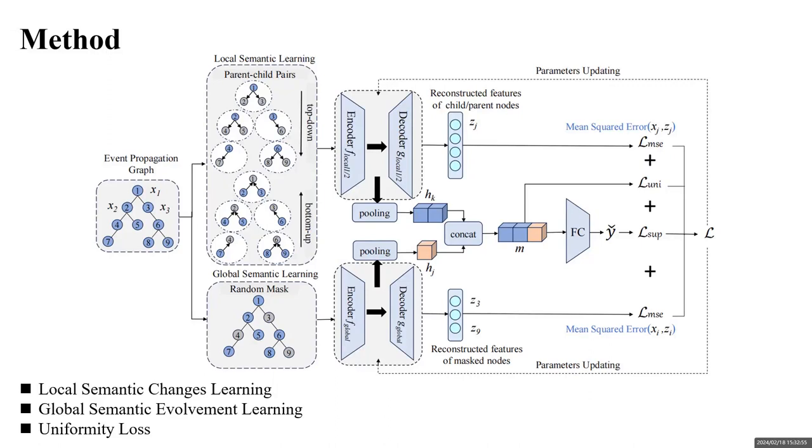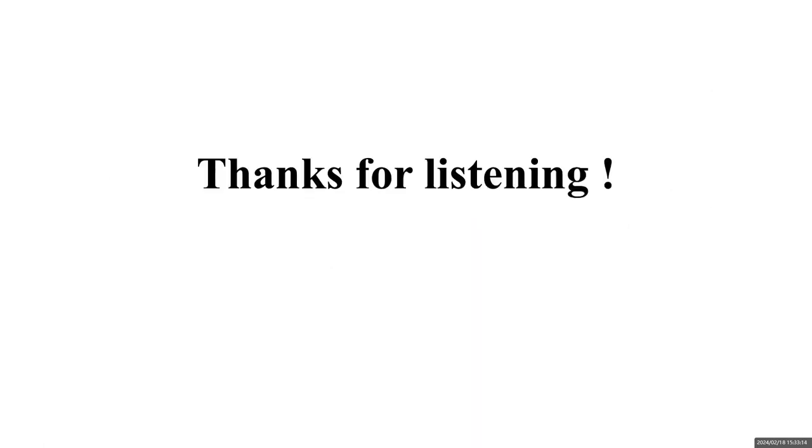Furthermore, in order to enhance the model's ability to learn the distinct patterns of rumors and non-rumors, we introduce a uniformity regularizer to further improve the model's performance, which prefers the uniform distribution on the unit hypersphere by pulling away the distance between the representations of different events. That's all for our introduction. Thank you for listening.